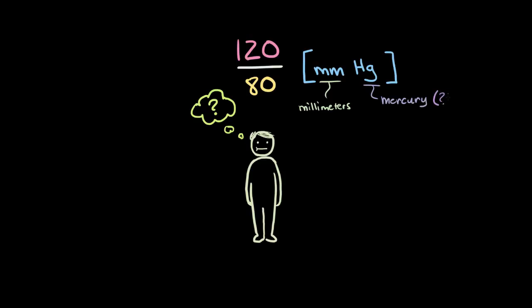I know, why Hg, right? Well, it's named after this Latin word for liquid silver, so it's essentially Latin. And so, millimeters of mercury is the standard unit used to present somebody's blood pressure.